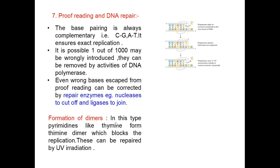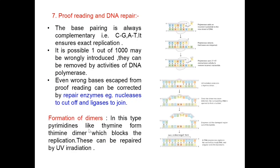Another form of DNA damage is formation of dimers. Pyrimidines like thymine can form thymine dimers, which block replication. This can be repaired by ultraviolet irradiation-based repair mechanisms. Once a dimer has been detected, the surrounding DNA is opened to make a bubble, an enzyme cuts the damaged region out of the bubble, and new undamaged DNA is replaced with the help of ligase enzyme. This is how proofreading and DNA repair take place.